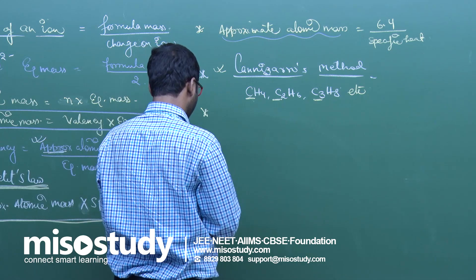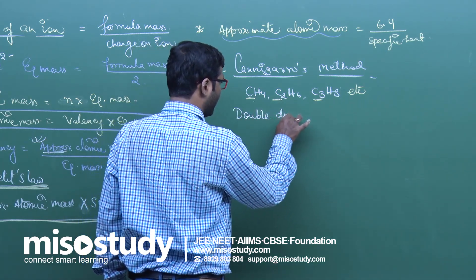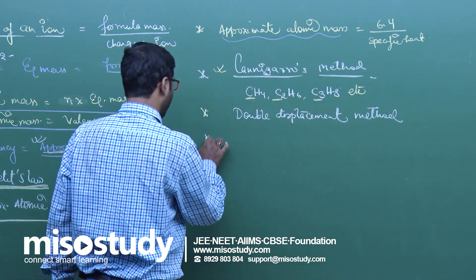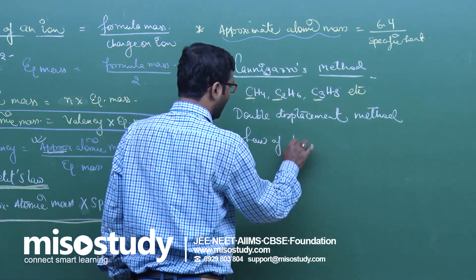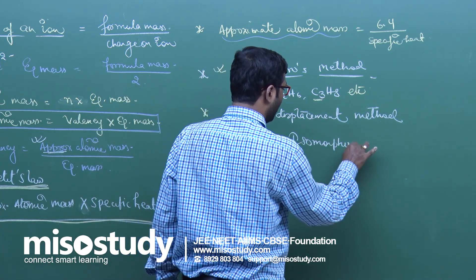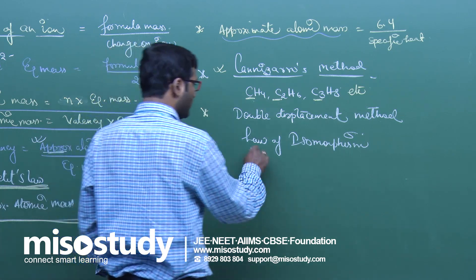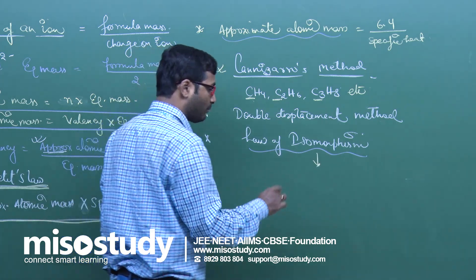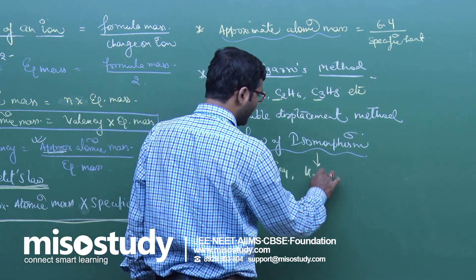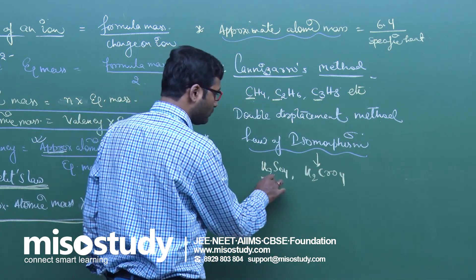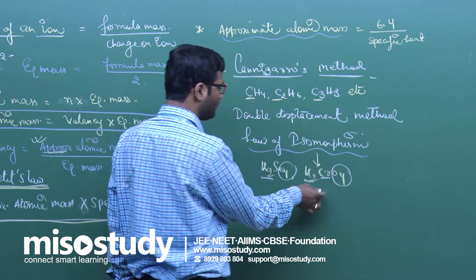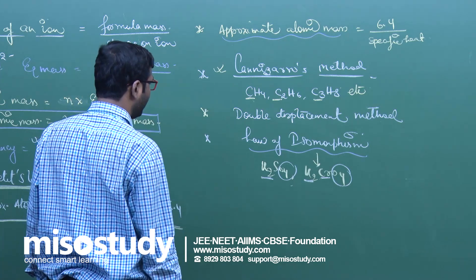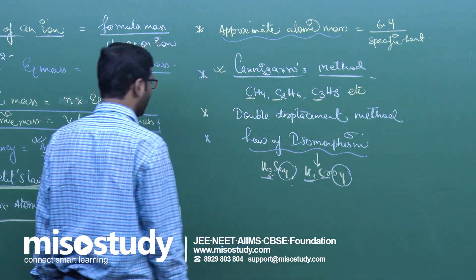Then we have the double displacement method, which I have also discussed during my regular lecture. After that, we have the law of isomorphism — meaning two crystals having the same composition. For example, K2SO4 and K2CrO4 are isomorphous. By using these methods, we can find the atomic mass and also relate atomic mass with equivalent mass.